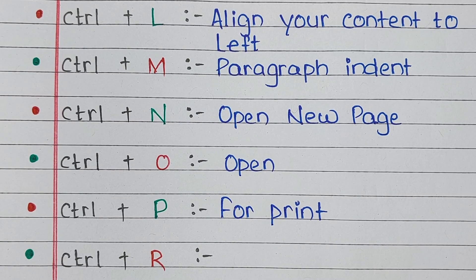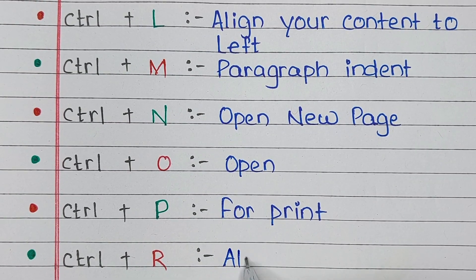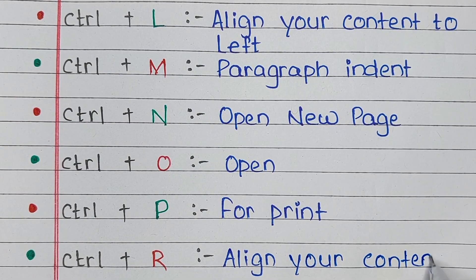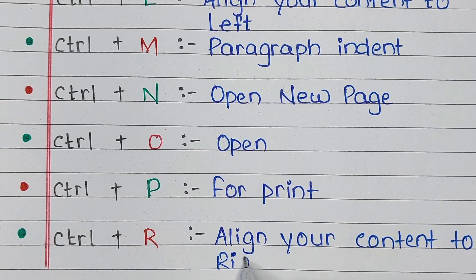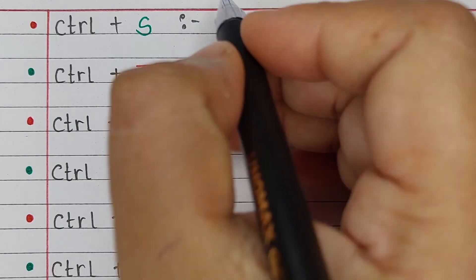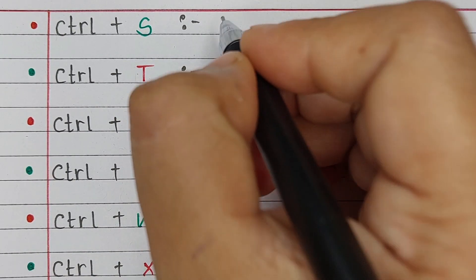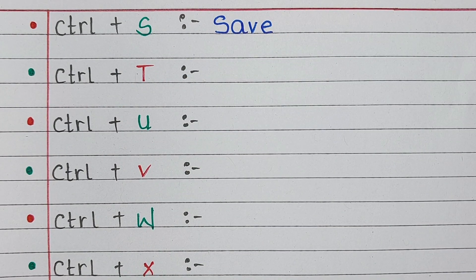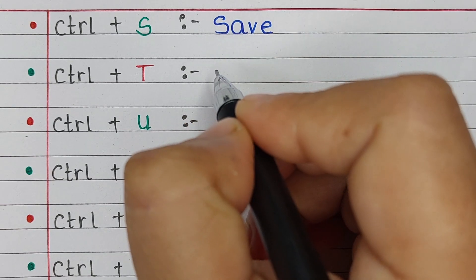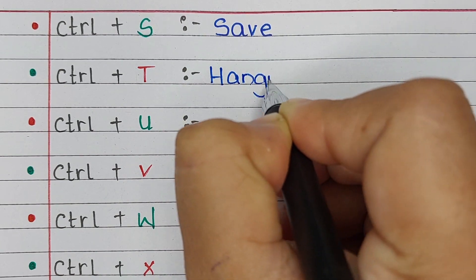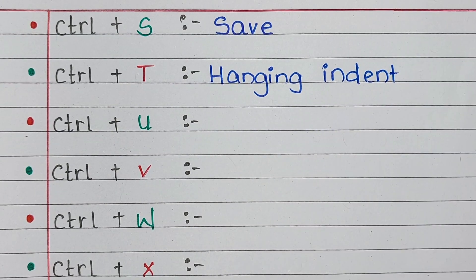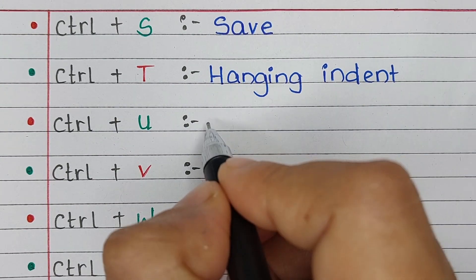Next one is Ctrl R. Ctrl R is the shortcut for align your content to the right. Next one is Ctrl S. Ctrl S is the shortcut for save. Next one is Ctrl T. Ctrl T is the shortcut for hanging indent.